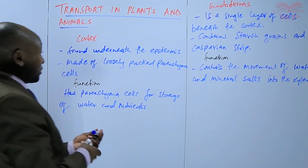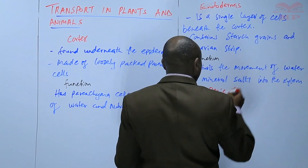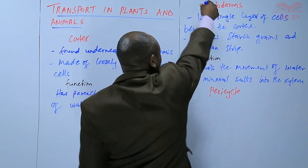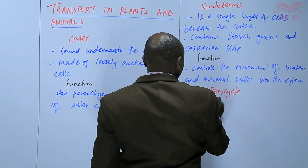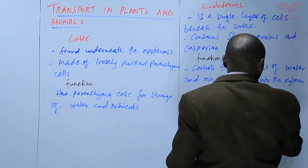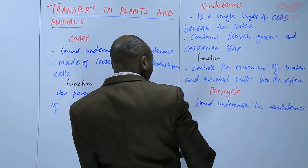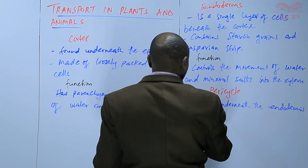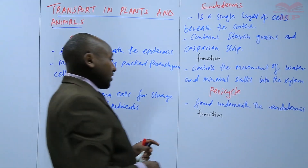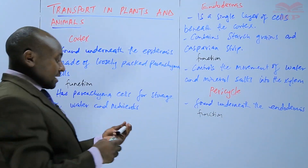The next tissue we are going to discuss is the pericycle. All these tissues are in the diagrams we had in our previous lesson. The pericycle is found underneath the endodermis, and its function is that it gives rise to lateral roots — the roots that grow sideways branch from the pericycle.